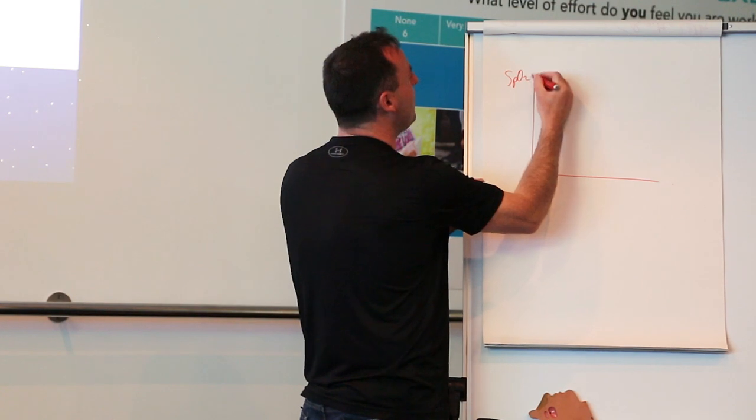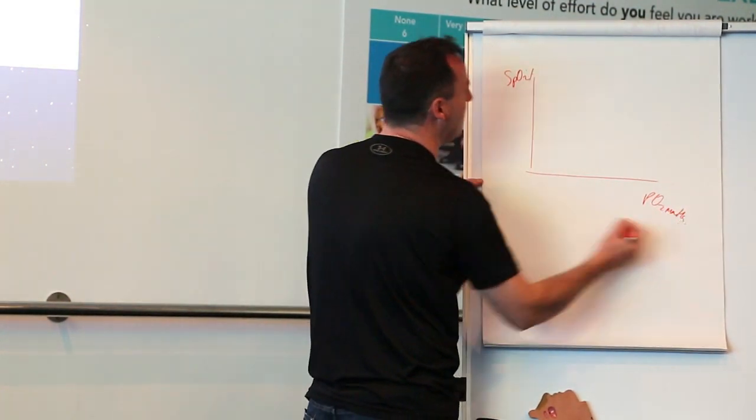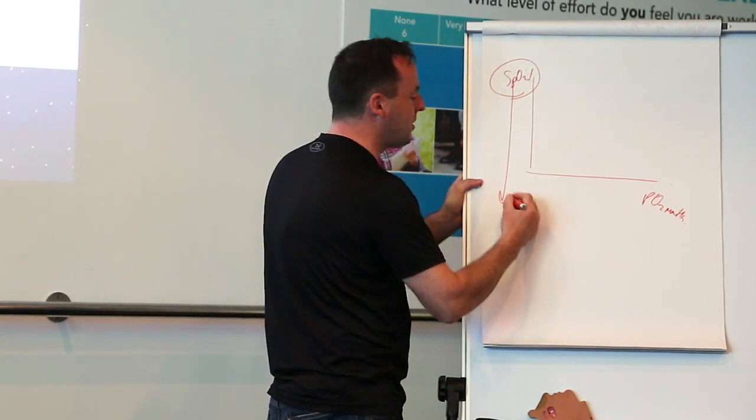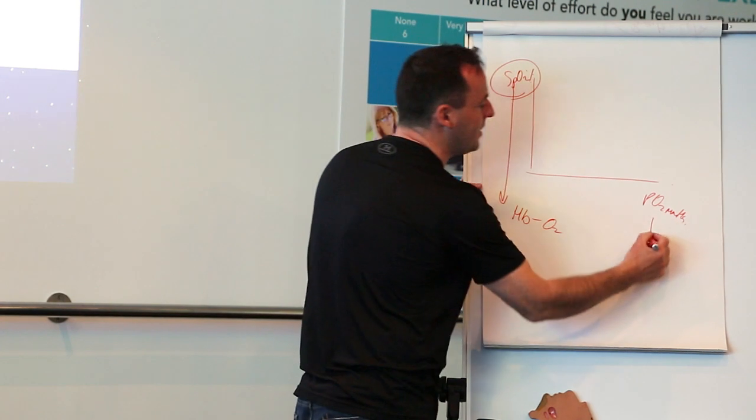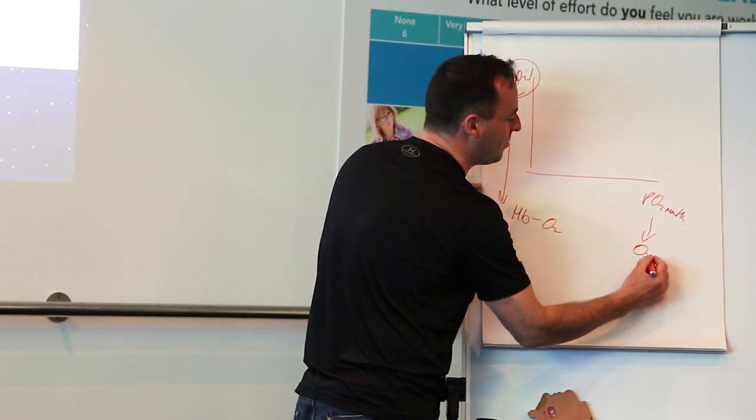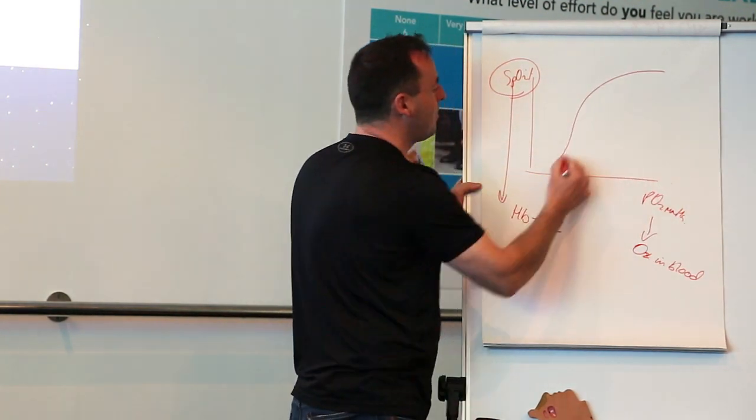You've got your SpO2 here, and you've got your amount of oxygen dissolved directly in the blood here. This here measures how fully loaded is your hemoglobin with oxygen. This here measures the amount of oxygen dissolved in blood. It's a nest-shaped curve.